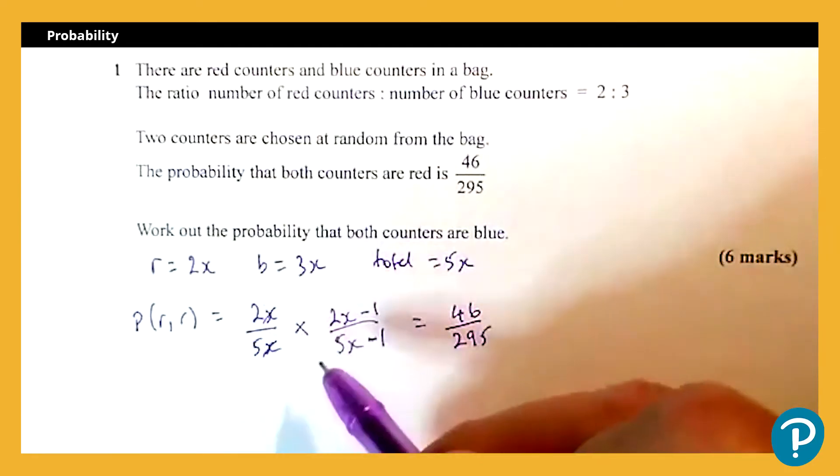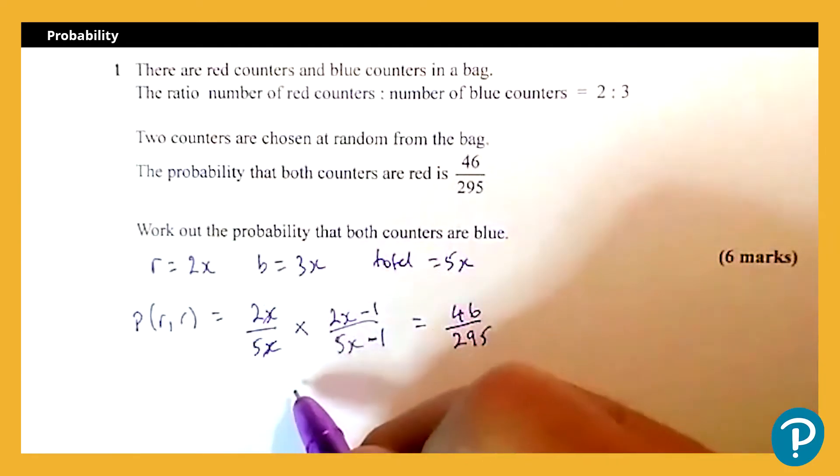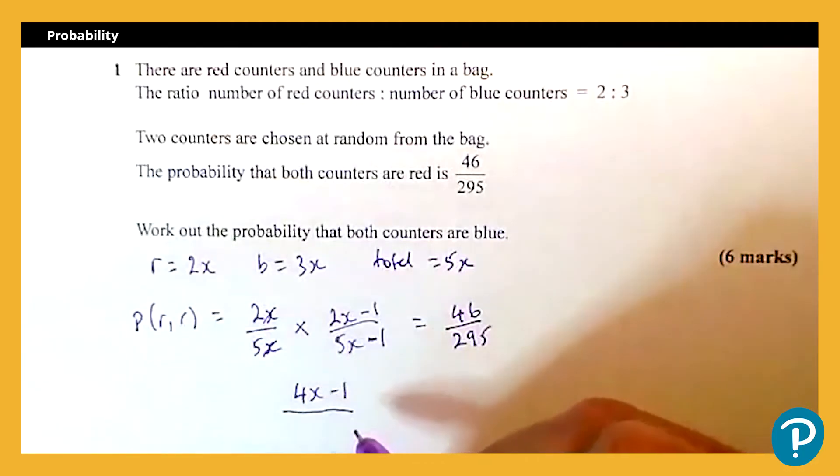So I'm going to have 4x minus 1... on 4x minus 2, sorry, that's me being silly. 4x minus 2 on the numerator and 25x minus 5 on the denominator.